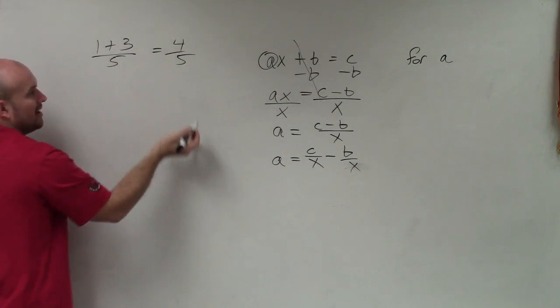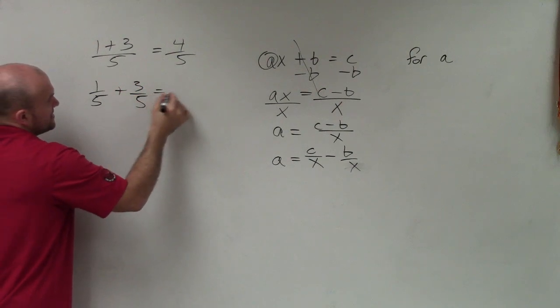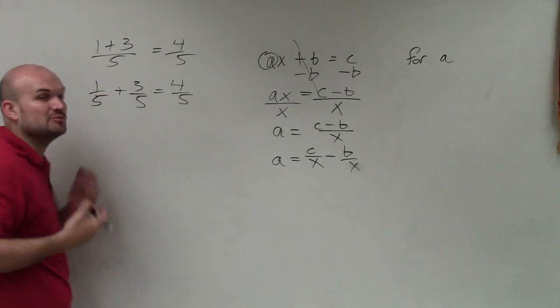that's equal to 4 over 5, right? So you could also say 1 fifth plus 3 fifths equals 4 fifths. It's the exact same thing. I just separated, divided that 5 into both of those terms.